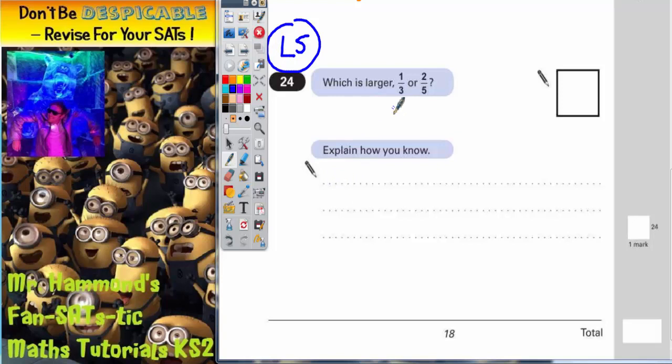You could actually make these fractions have common denominators. So find equivalent fractions with a common denominator. Now a little trick, if ever you want two fractions to have a common denominator, if you times the denominators together, so 3 times 5 is 15, let's make them both out of 15.